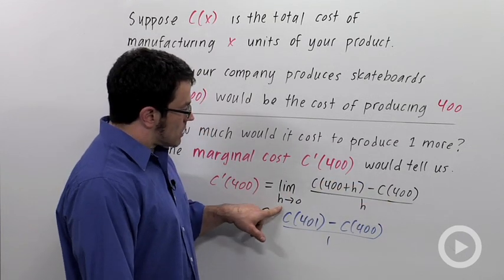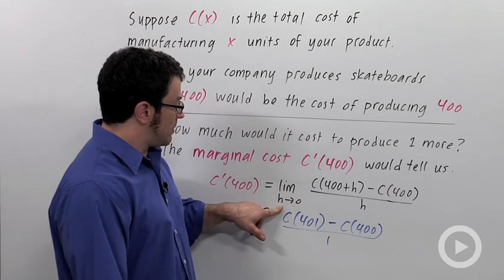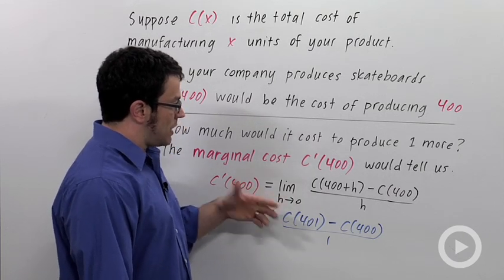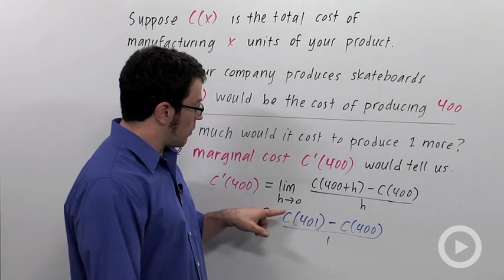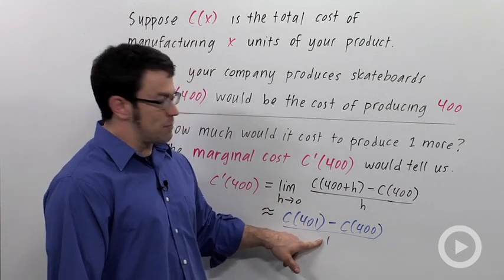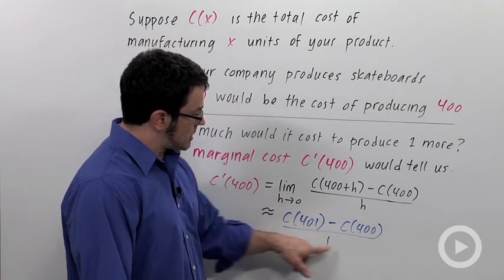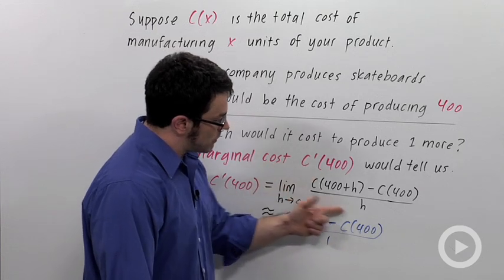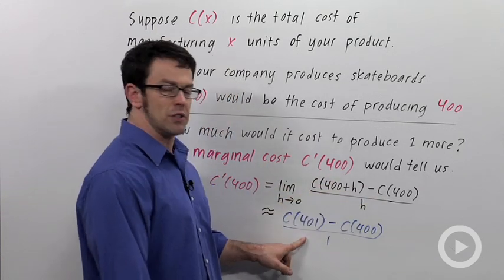And of course, a way of approximating this limit is to take a very small value of h. And when you're on the order of hundreds of skateboards, h equals 1 is a pretty small value. So this expression here is the difference quotient evaluated with h equals 1.